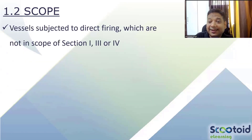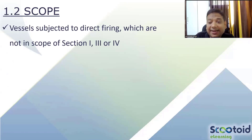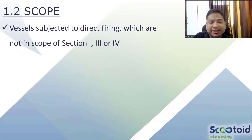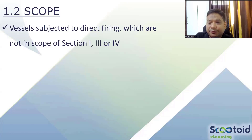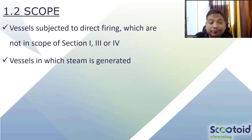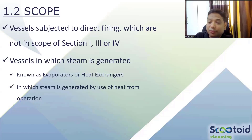Direct firing is an example where the pressure source is internal — it is similar to a reactor where a reaction and firing are happening. Such vessels can be designed as per Division 2 if they fall out of scope of Section 1, Section 3, or Section 4, since all three codes also address direct-firing vessels. If for some reason they are out of scope of those codes, Division 2 can be used. Vessels in which steam is generated — such as heat exchangers and various steam applications — are also within scope.